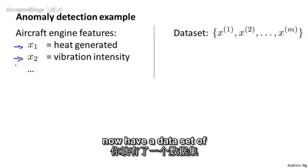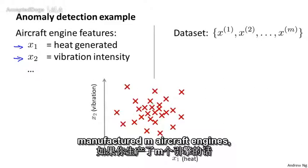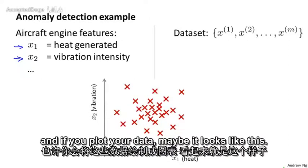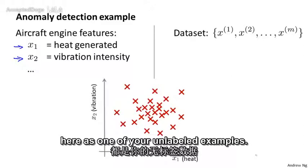And so you now have a data set of X1 through XM, if you have manufactured M aircraft engines. And if you plot your data, maybe it looks like this. So each point here, each cross here is one of your unlabeled examples.